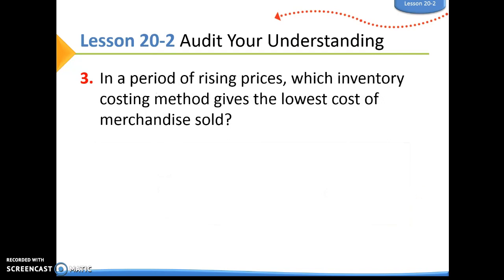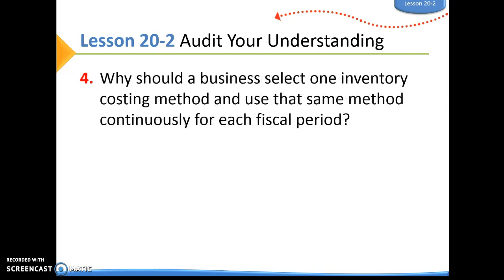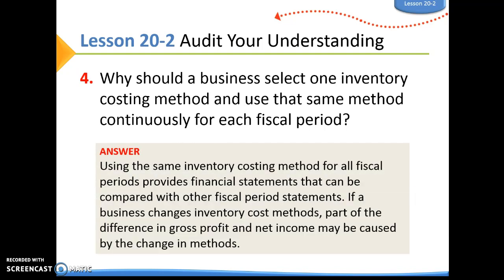Number three: in a period of rising prices, which inventory costing method gives the lowest cost of merchandise sold? That would be FIFO. Number four: why should a business select one inventory costing method and use that same method continuously for each fiscal period? Using the same inventory costing method for all fiscal periods provides financial statements that can be compared with other fiscal period statements.